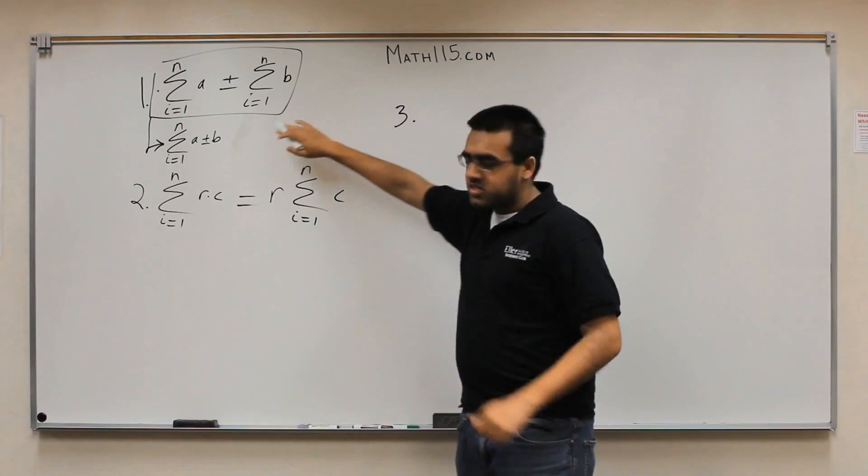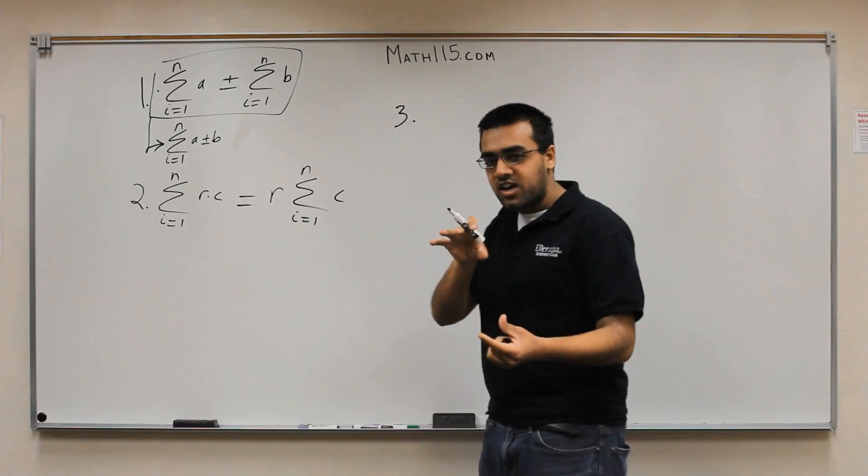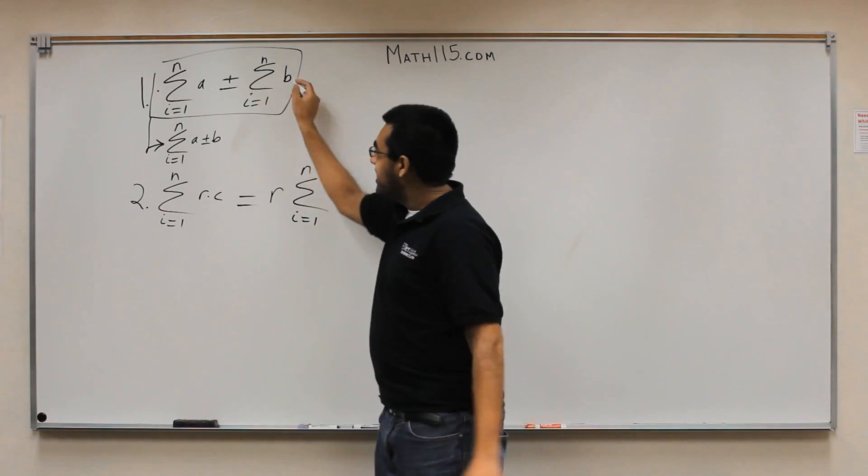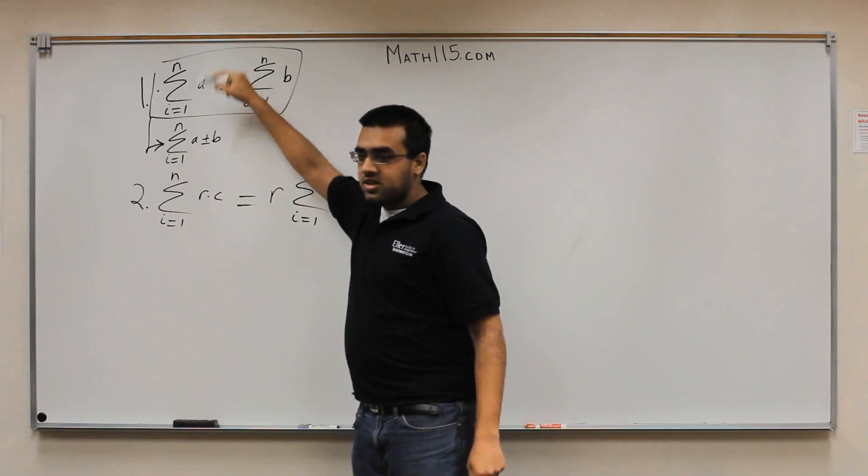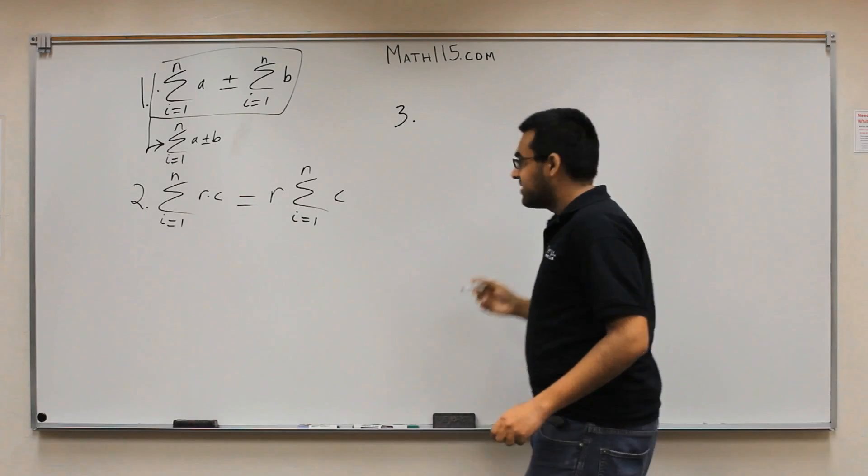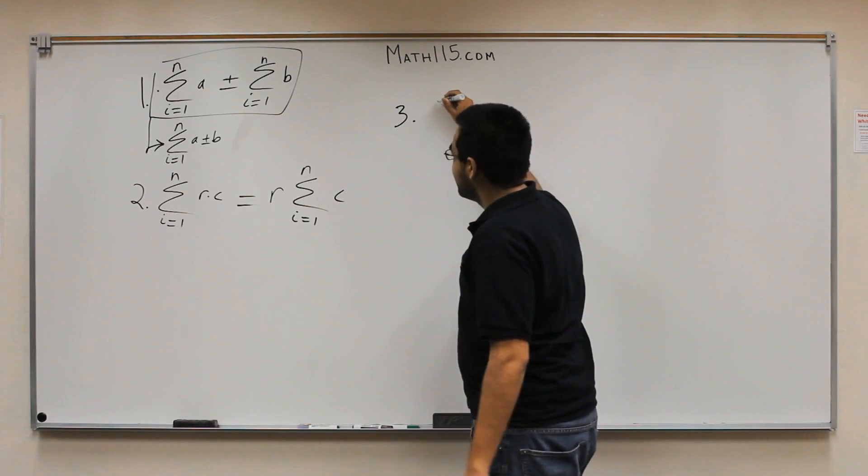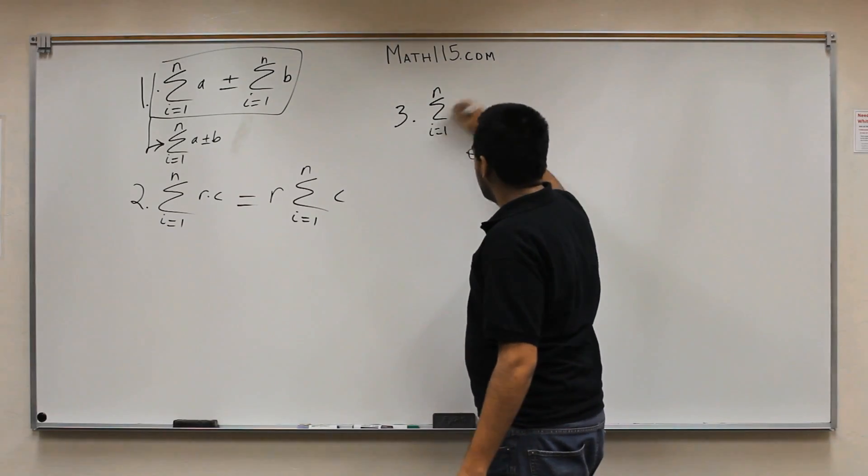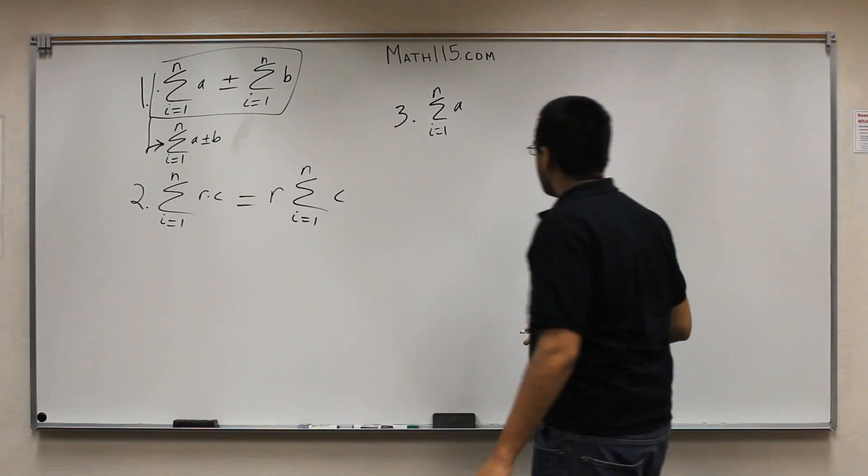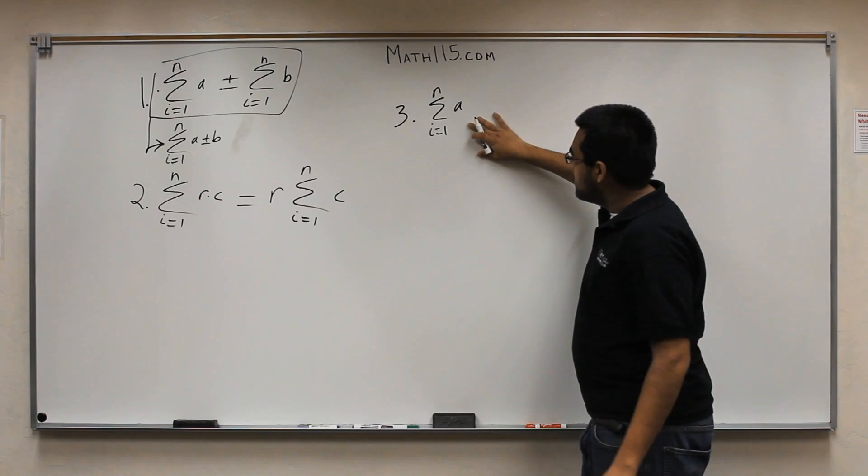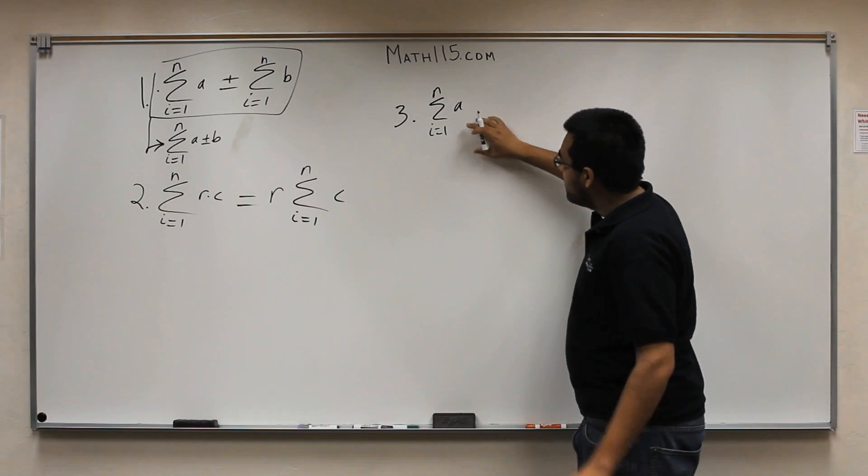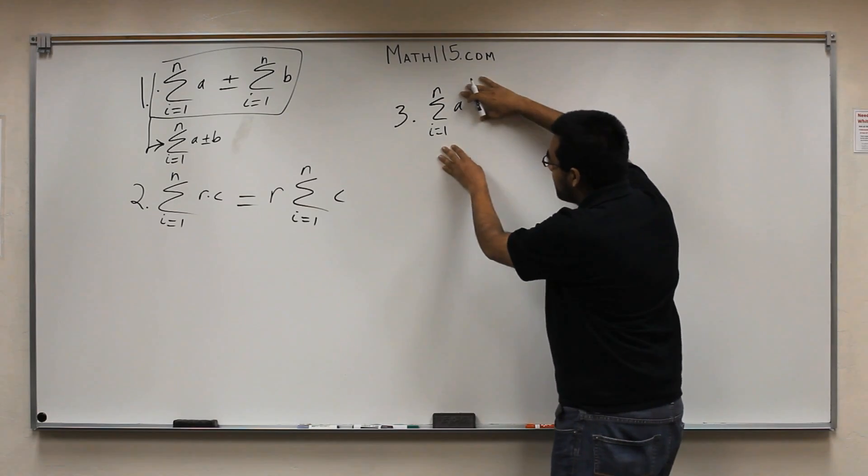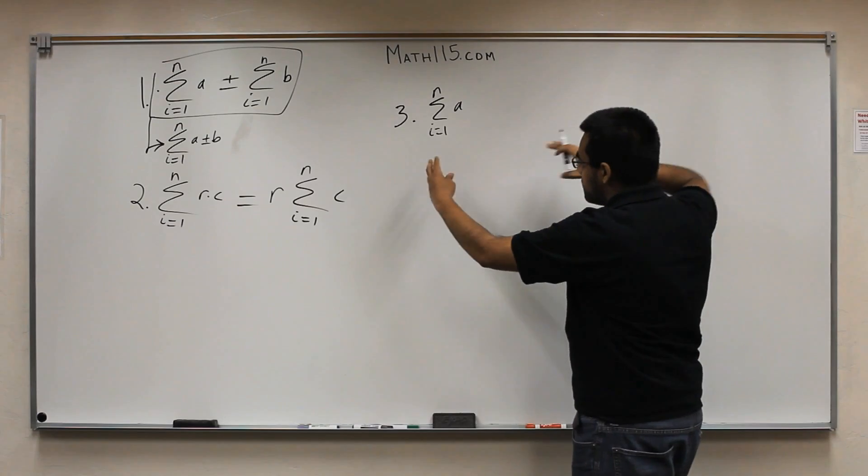Rule number three is going to look similar to rule number one. However, this time, instead of manipulating the inside, what we're going to do is we're going to manipulate the indices. Okay. So, i equals 1 to n. And I'm just going to put in a here for now. So, this is your base. But let's say, rather than dealing with this whole thing, you wanted to break it up into two summations.